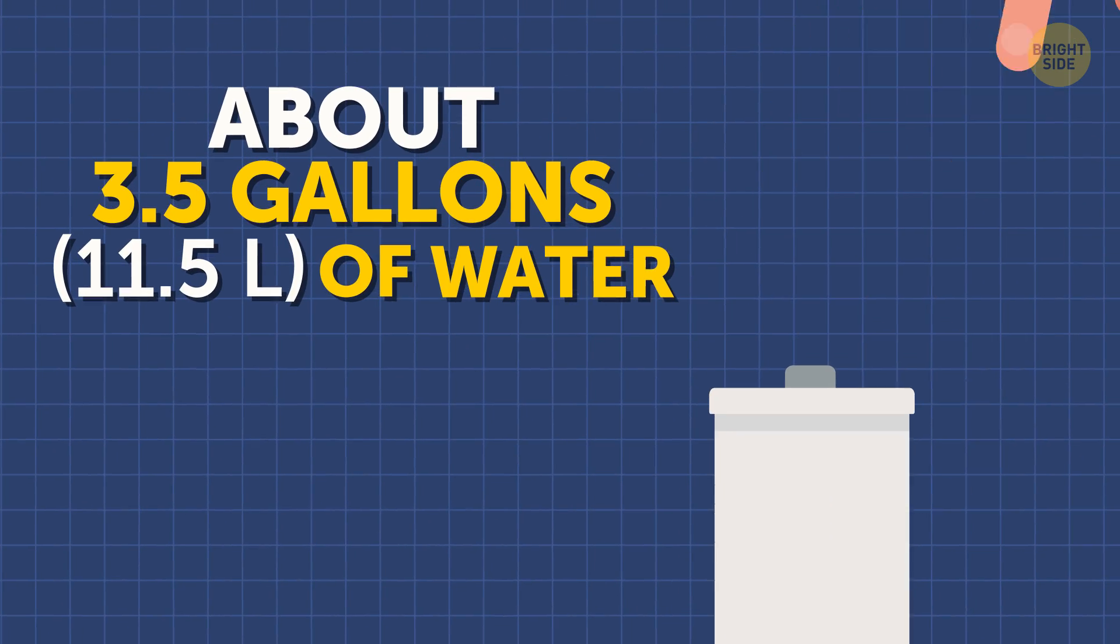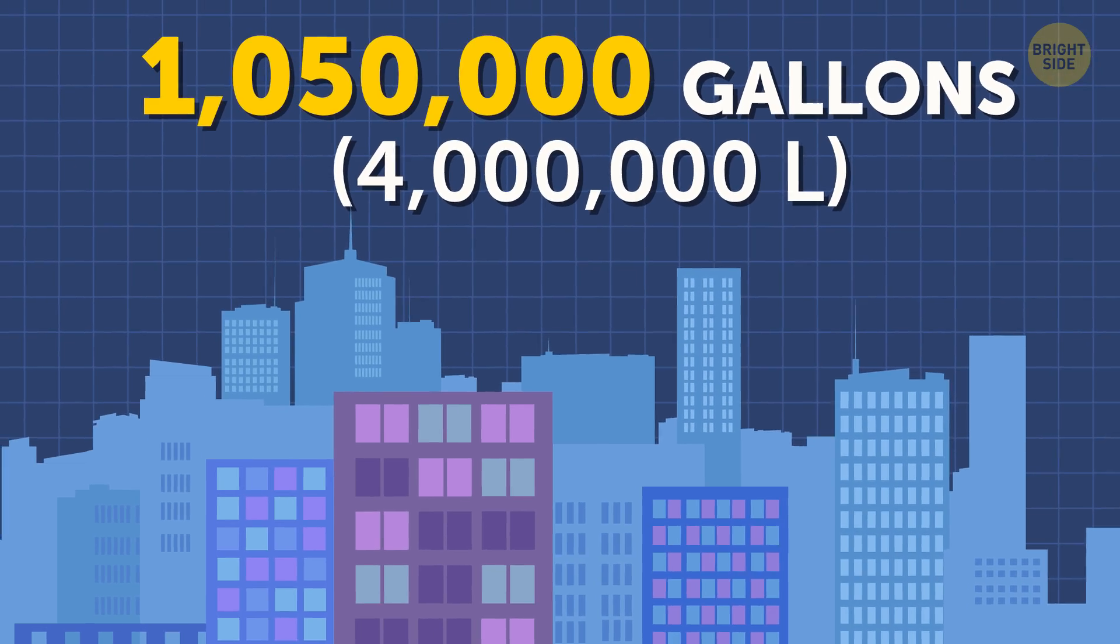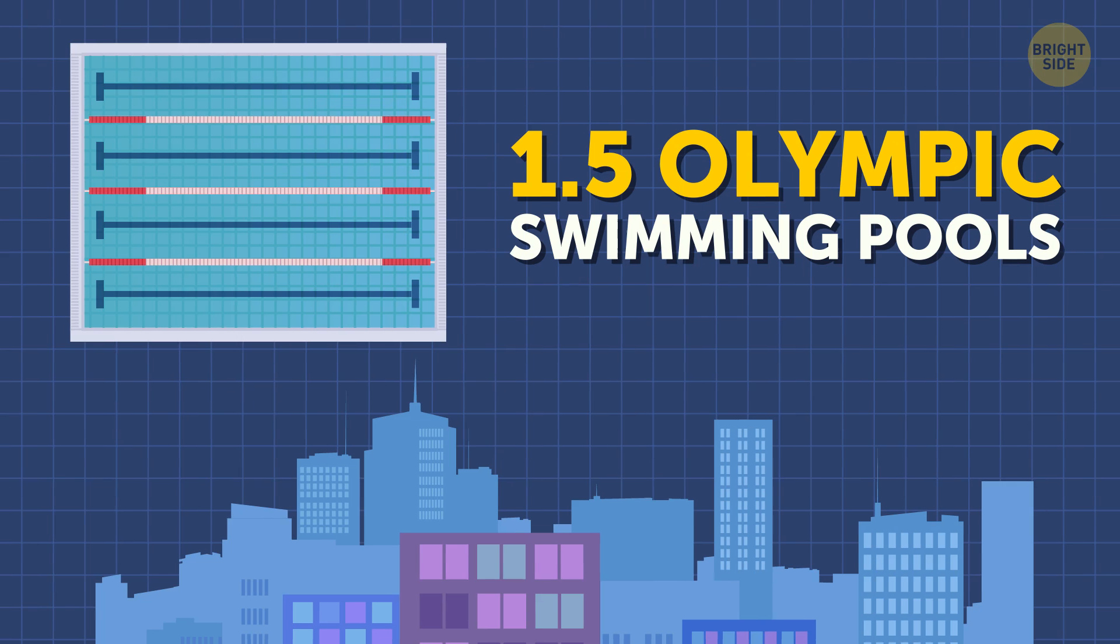one flush ejects about 3.5 gallons of water. So that's 1,050,000 gallons of water for the whole Flushington, same as 1.5 Olympic swimming pools.